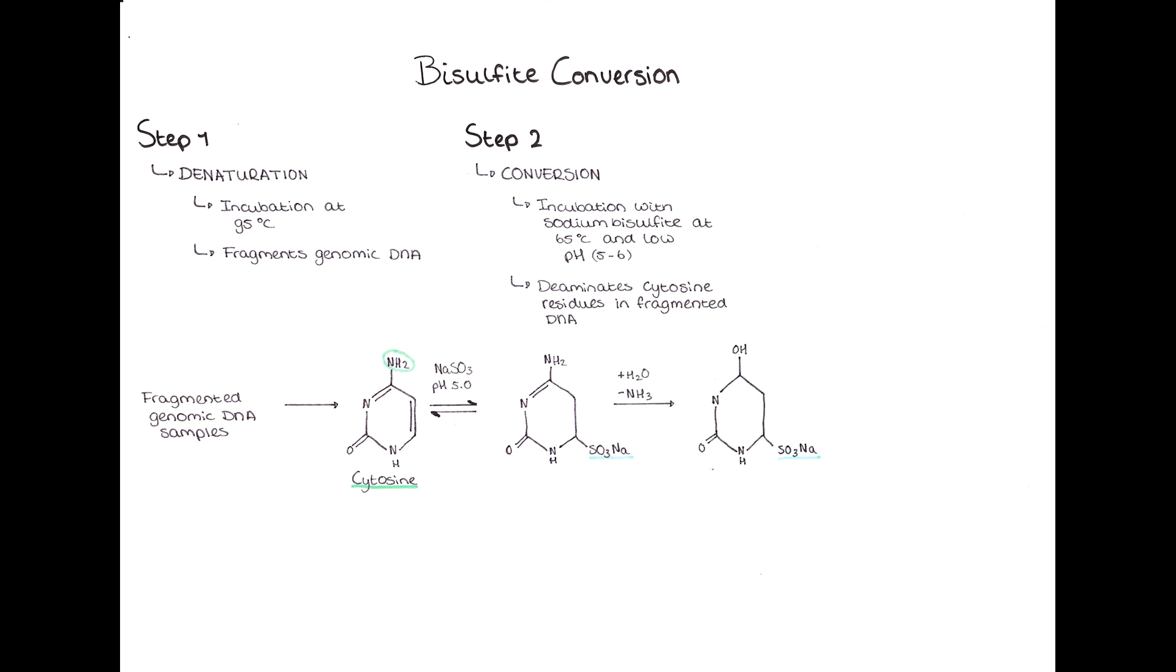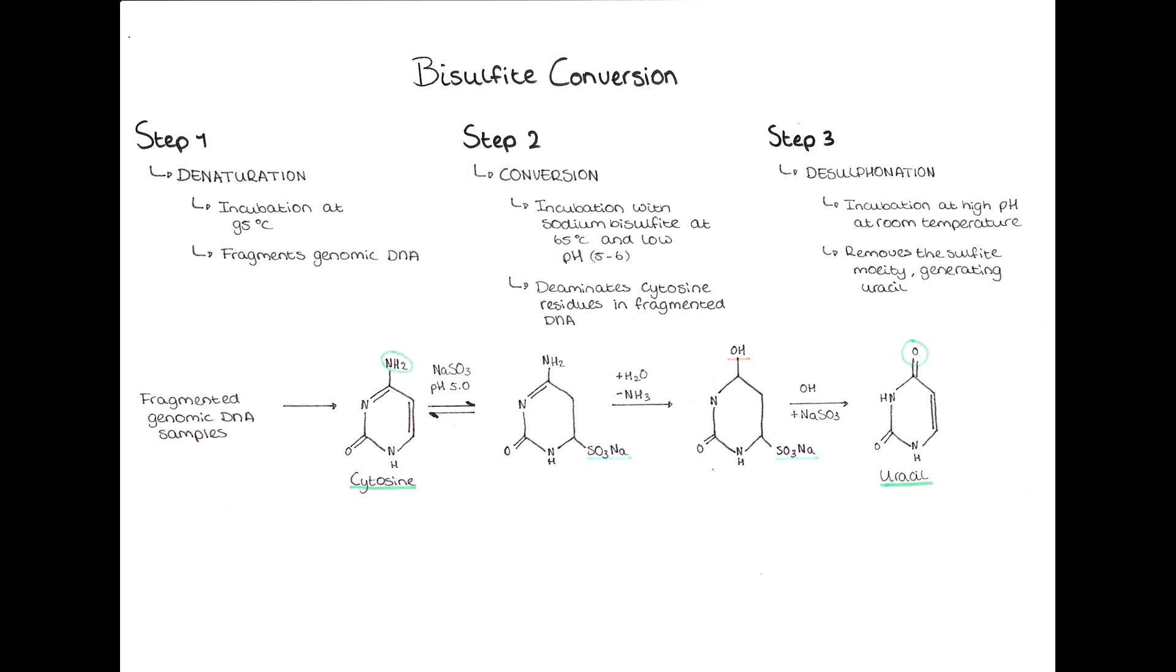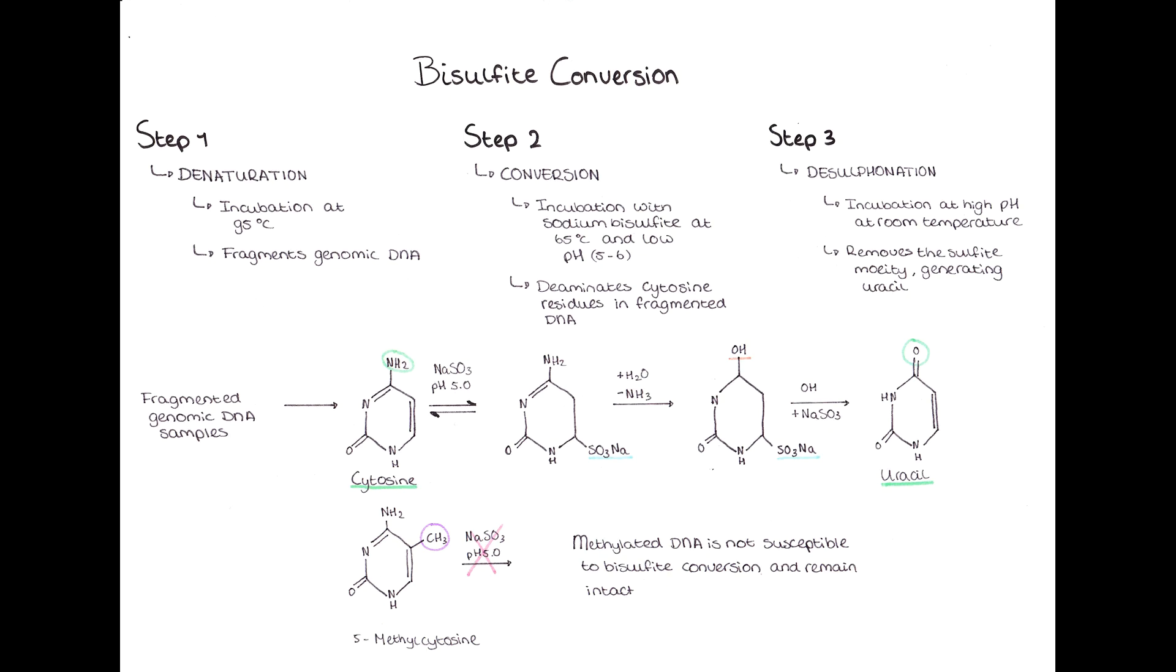The cytosine sulfonate then undergoes hydrolytic deamination, creating uracil sulfonate. The sulfonate group is then removed via desulfonation, generating uracil. A 5-methylated cytosine is unable to undergo this process and will remain intact.